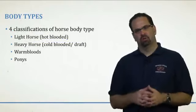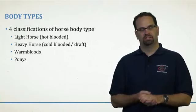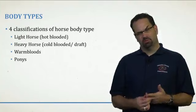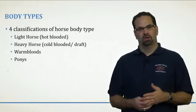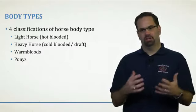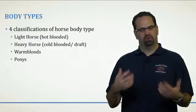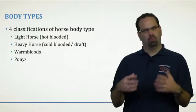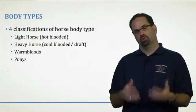Before we jump into individual breeds, we first need to talk about how they're divided up or classified, along these four classifications: the light horse, which we sometimes call hot-blooded; the heavy horse, which we call cold-blooded or a draft animal; then the warm bloods; and then the ponies. When you hear hot-blooded, that's not the actual temperature of their blood or body — it was more in reference to their behavior or demeanor. Hot-blooded horses were seen as a little more fiery, while cold-blooded was more docile.